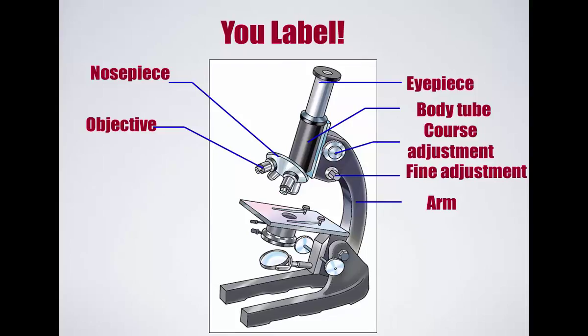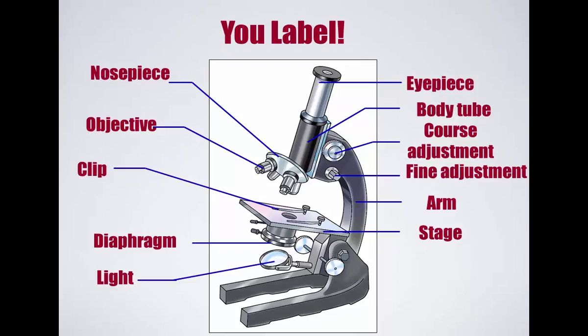How about this part? This flat area. What's that called? Olivia? Stage. That's the stage. What are these things called? Vinny? Stage clips. How about underneath the stage? This apparatus here. Brennan? It's a diaphragm. It adjusts the amount of light. The light source is underneath, or in this case, it's a mirror. And then it rests on the base. Don't worry about condenser control. Those are the parts of the microscope.